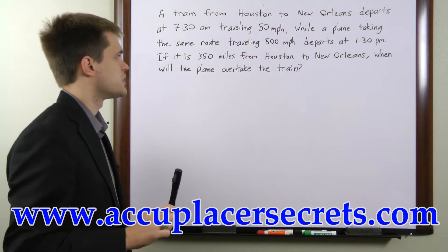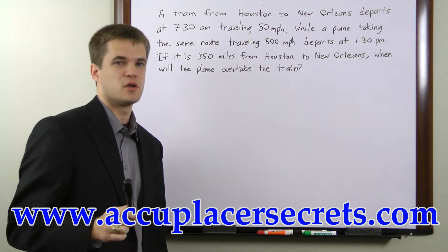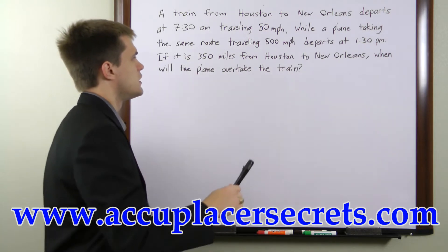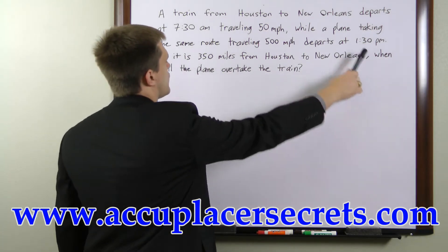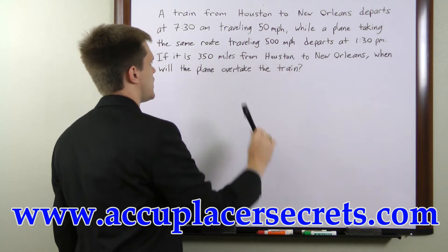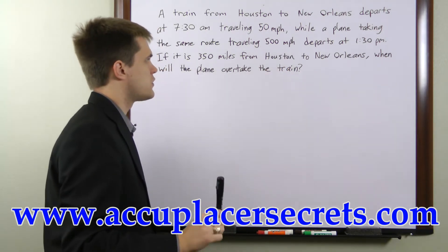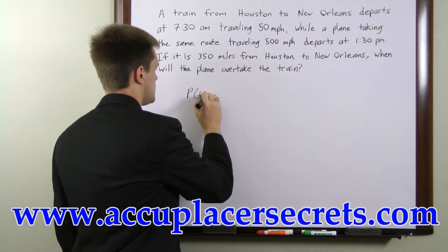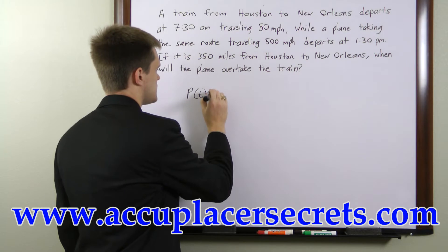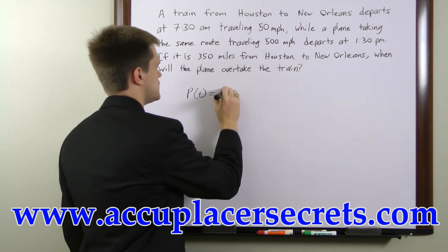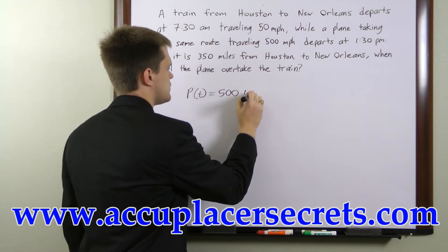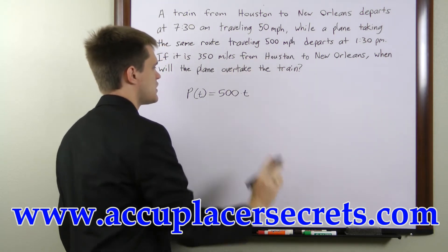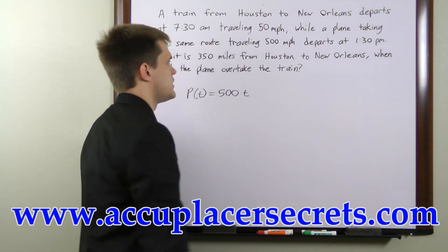The first thing we want to do is write equations of motion for both the plane and the train. Starting with the plane, which departs at 1:30 p.m. traveling 500 miles an hour, our equation of motion is just position at time t equals 500 times t, where t is measured in hours starting at 1:30 p.m.